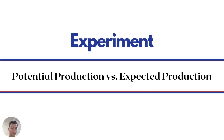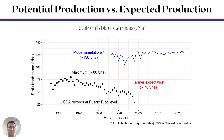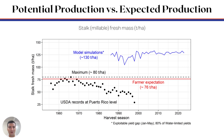We performed different experiments, but in this case we focused on potential production and expected production. We also talked with some farmers there, and I had experience working at that same sugar cane farm. We have some records in Puerto Rico, and we saw the maximum values were around 80 tons per hectare. The farmer's expectation is about 76 tons per hectare, and we see that our model can almost double it.